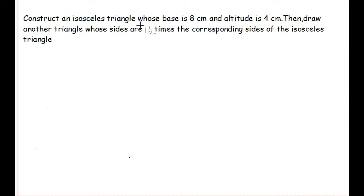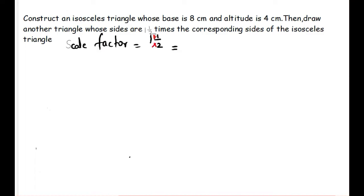So what is the scale factor given here? 1½ times — that is the scale factor is given as 1½, written as a mixed fraction. To convert it into an improper fraction, we multiply 2 with 1: 2 ones are 2, then add the numerator. So 1 × 2 = 2, and 2 + 1 = 3. So the scale factor is 3/2.